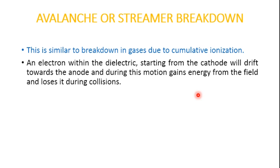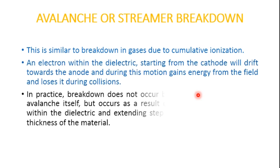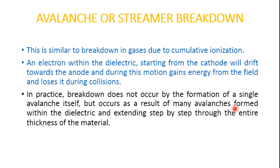Breakdown occurs when the avalanche exceeds a certain critical size. In practice, breakdown does not occur by formation of a single avalanche, but as a result of many avalanches within the dielectric extending step by step through the entire thickness of the material. Free electrons move from one atom to another, collide, gain energy from the electric field, and lose part of their energy. When this happens continuously, too many electrons are liberated, resulting in an avalanche between the two electrodes, eventually initiating streamers.